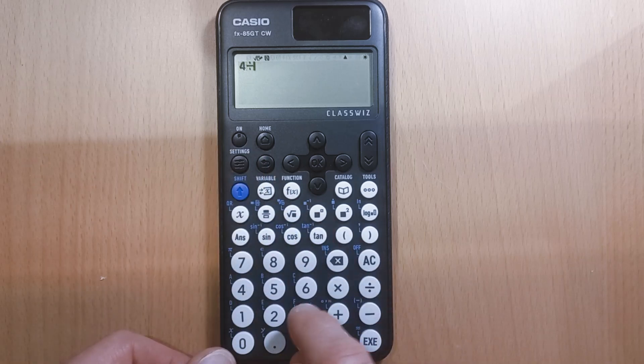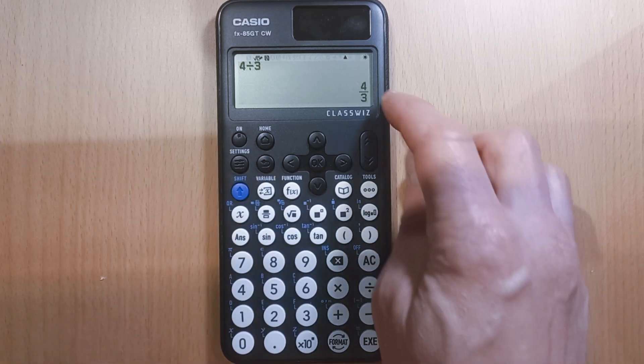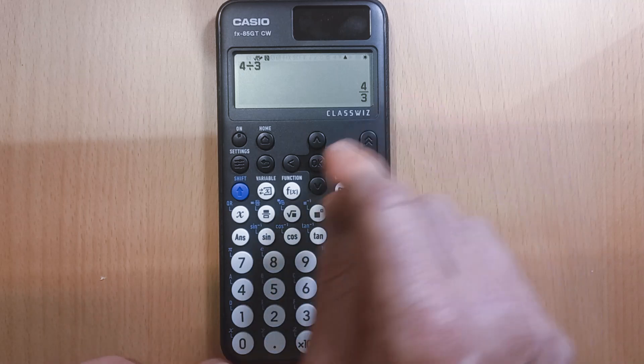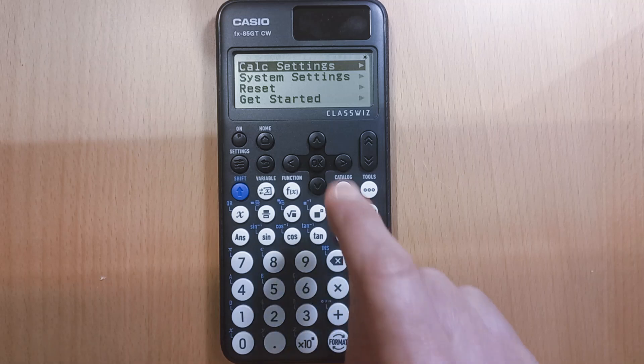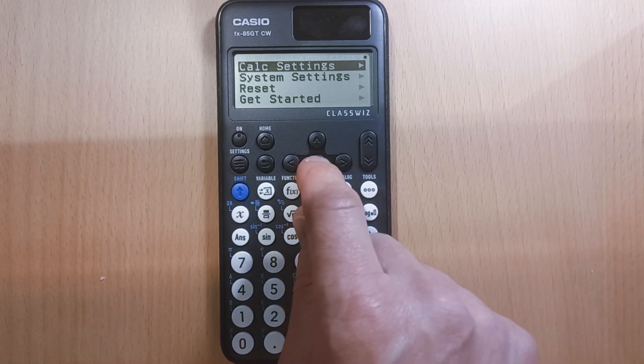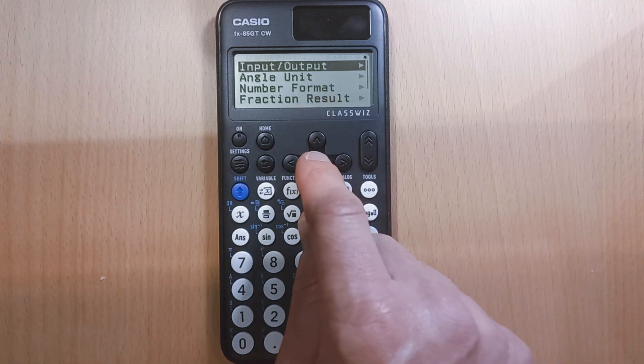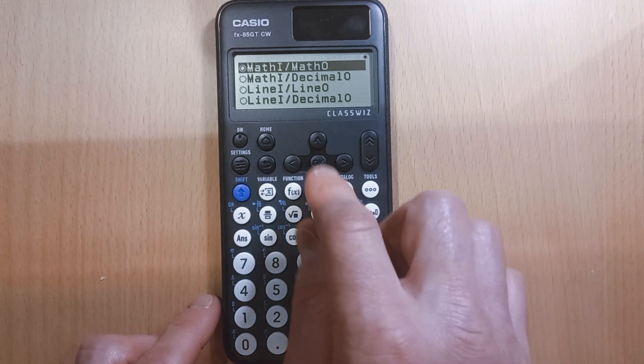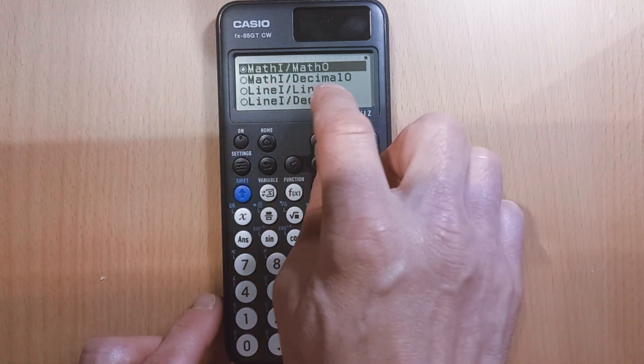So when I type in 4 divided by 3, or it could be anything else, you don't want it to show as a fraction—if you want it to show as a decimal every time, then you need to go into your settings. So it's Settings, Calc Settings, press OK, Input/Output, OK, and what we want is Math In, Decimal Out.